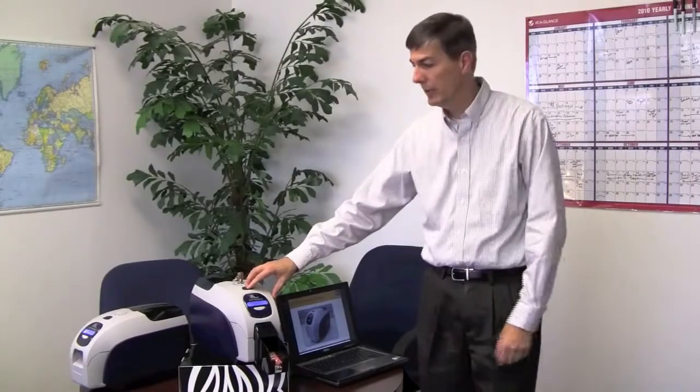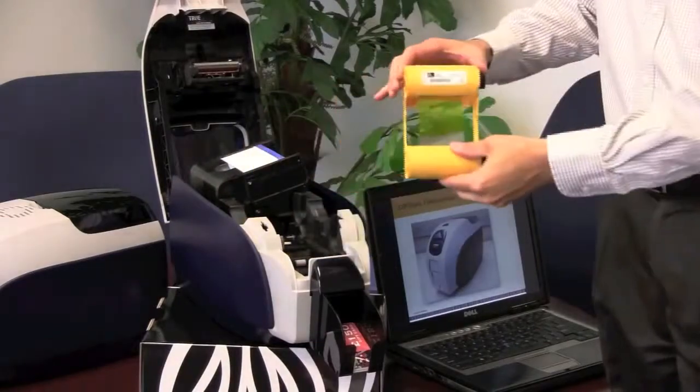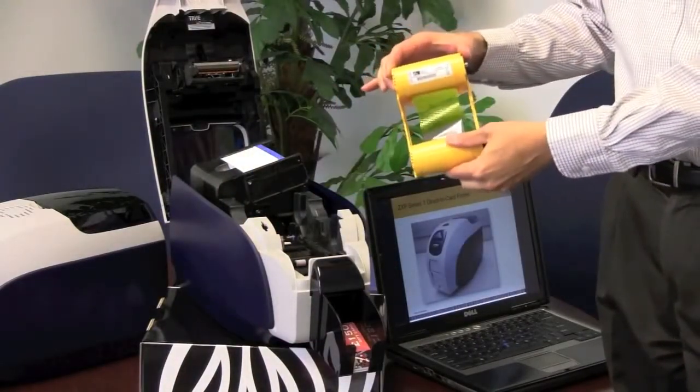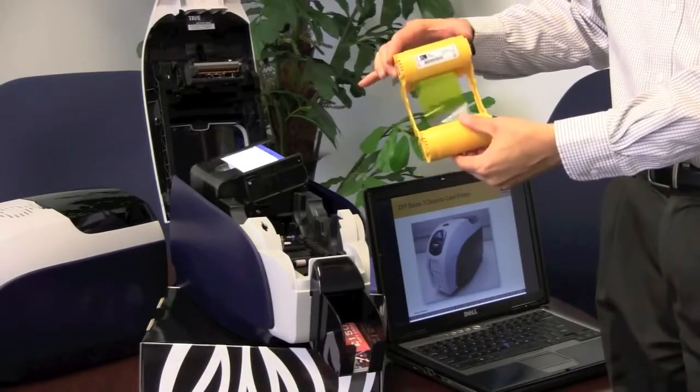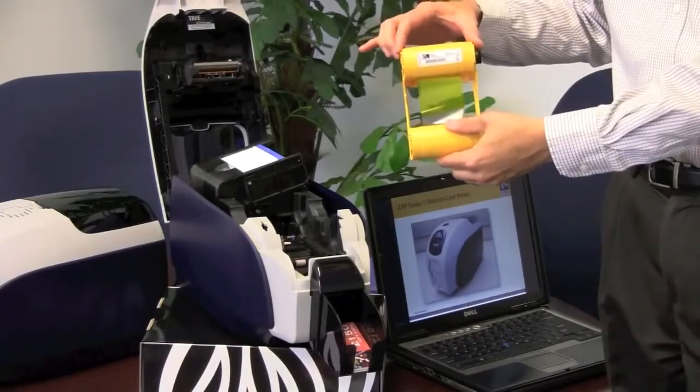Let me tell you about one additional element that enables the improved image quality and the high speed. The ZXP Series 3 uses a new and improved True Colors I-Series ribbon that's reformulated to enable high speed printing. This ribbon has improvements on both sides to enable higher print speed, greater durability, and freedom from print artifacts.